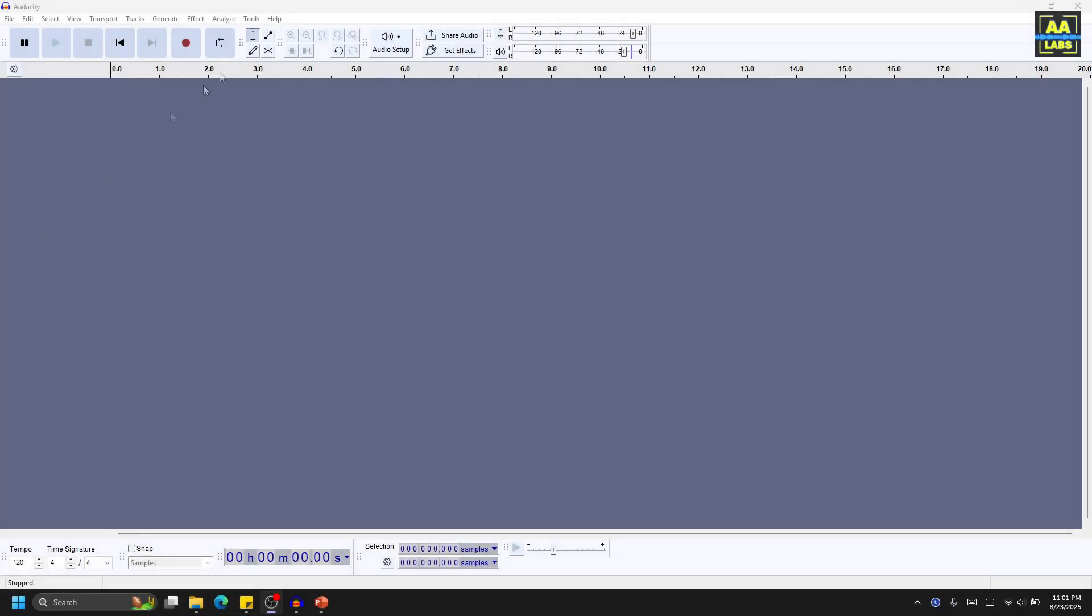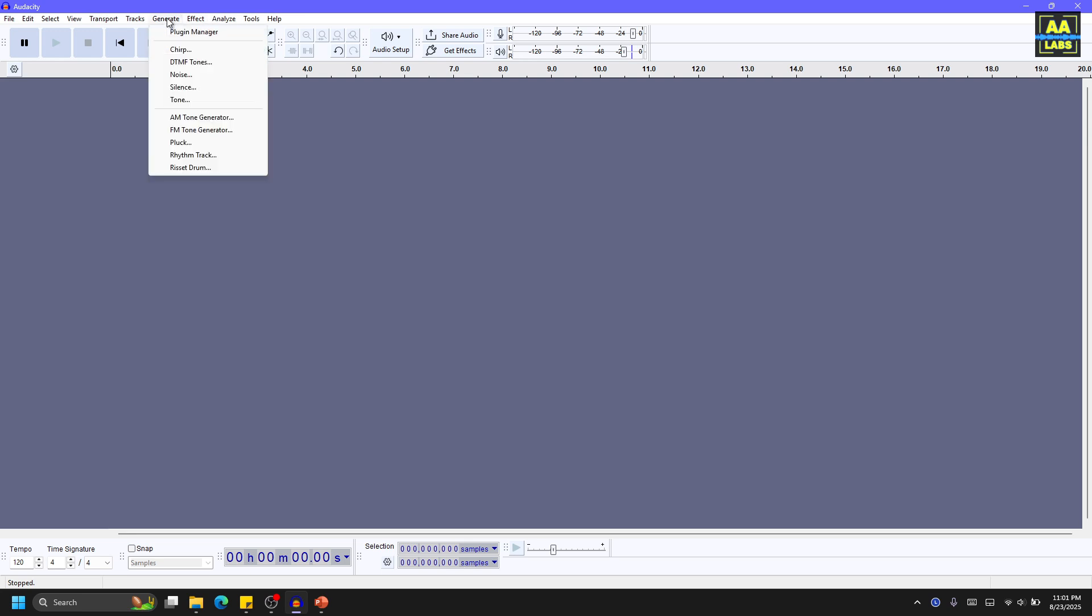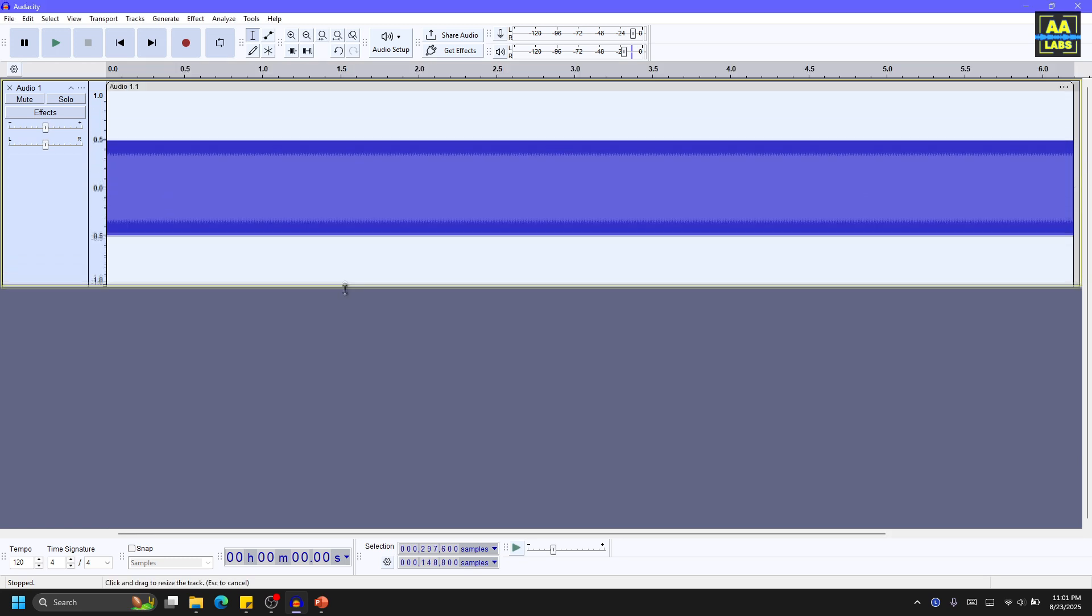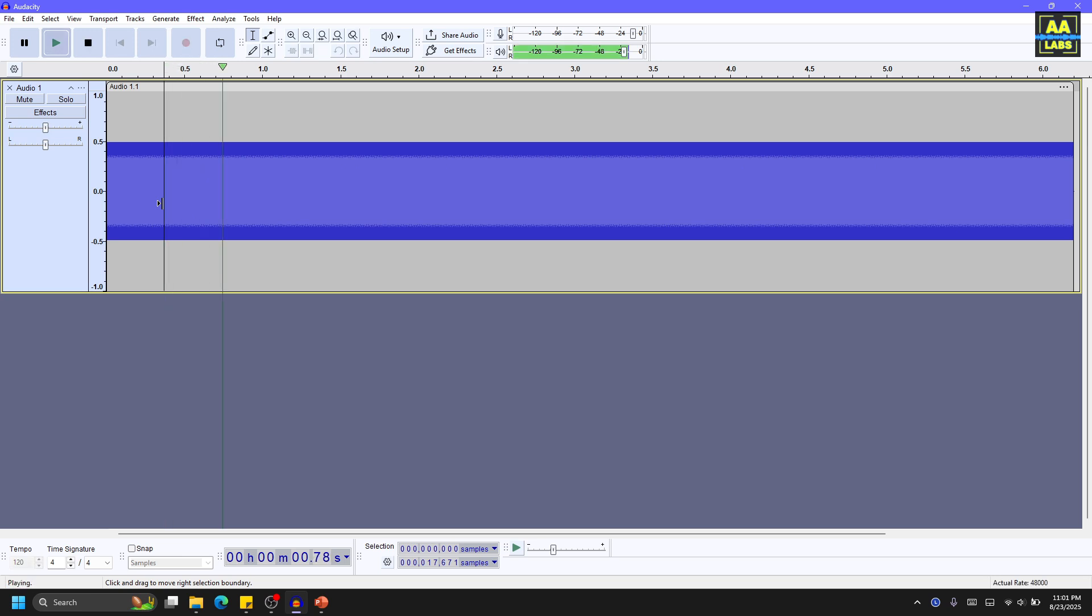So the last thing I'm going to do is a quick demonstration in Audacity, the free open source audio editing software, which is a great program for learning about signals. Now I'm going to generate a tone, and this is going to be a pure sine tone at 500 Hz. We can listen to this tone. It sounds like a sine wave.